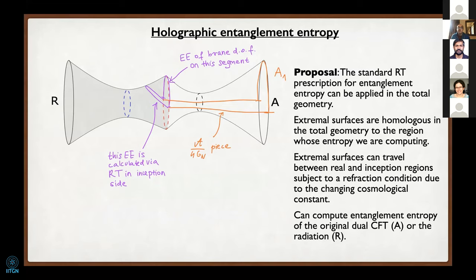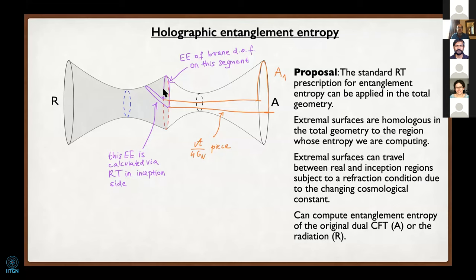The key is that there are actually two replica-symmetric saddles. One is where you fill in the bulk geometry with a fixed point of the replica symmetry on the inception—radiation—side. Another is a replica-symmetric saddle where you fill it in on the real black hole side. Essentially, the second saddle involves additional wormholes running between the original BTZ parts of the geometry. These two saddles exchange dominance, corresponding to the RT transition between the two phases.